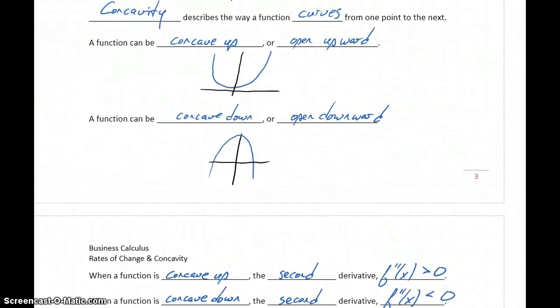So looking back at the two curves that we sketched here, since our function is concave down, f double prime would be negative for the entire domain.